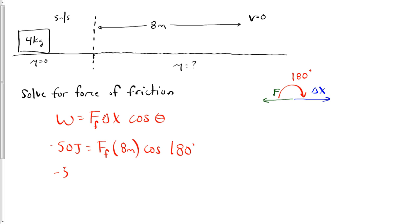So -50 joules equals 8 times the cosine of 180°, which is -1, times -Ff times 8 m. So the force of friction is 6.25 N.